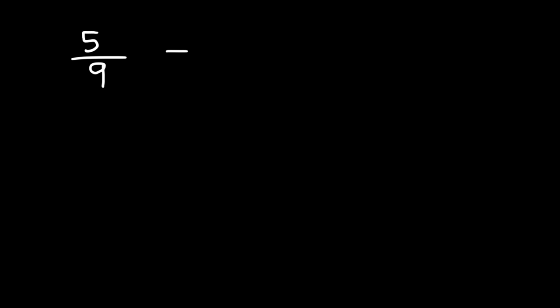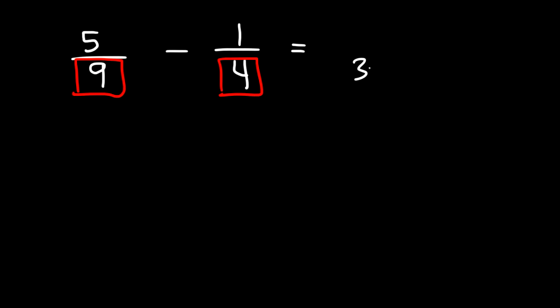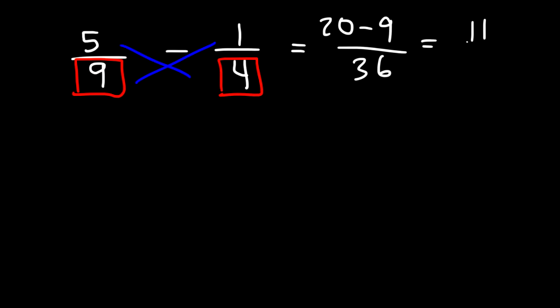Before we go into subtracting 3 fractions, let's talk about another method in which we can subtract 2 fractions. In the previous method, we would multiply 9 and 4, giving us 36, and then cross multiply. 5 times 4 is 20, and 9 times negative 1 is negative 9. So it's 20 minus 9, which is 11, giving us 11 over 36.